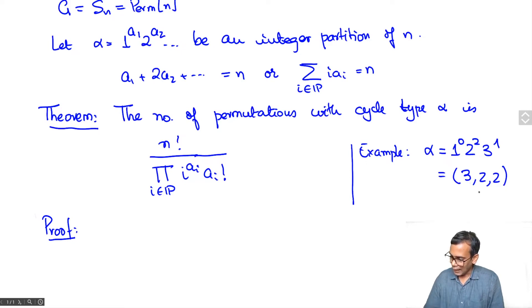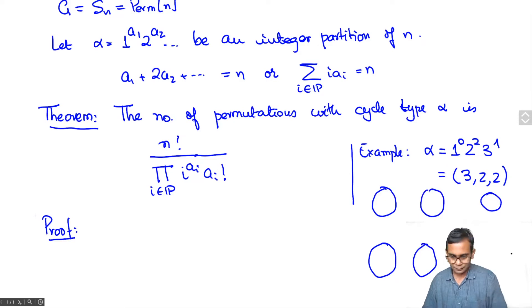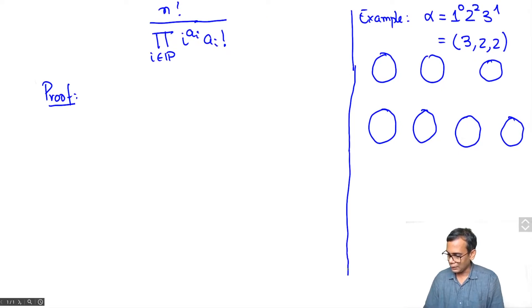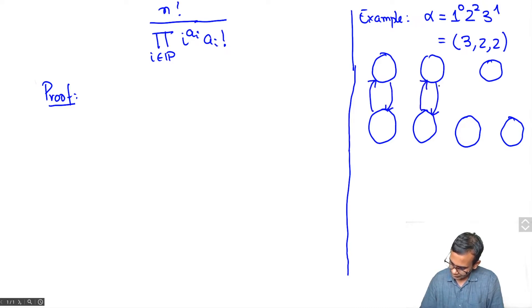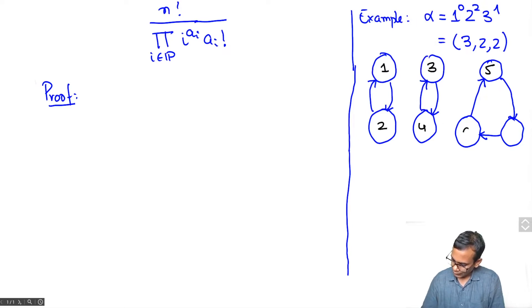So we have one 3-cycle and two 2-cycles. Let me draw these — here is a 2-cycle, here is another 2-cycle, and here is a 3-cycle. Now I have to put in the numbers 1, 2, 3, 4, 5, 6, 7 into these boxes. For example, I could put them as 1, 2, 3, 4, 5, 6, 7. But there are many other ways of doing this.